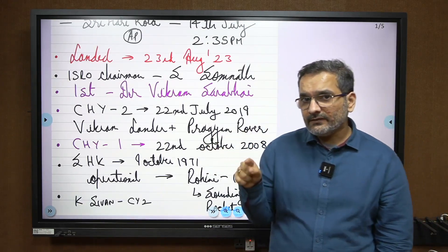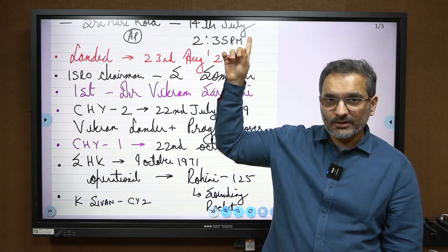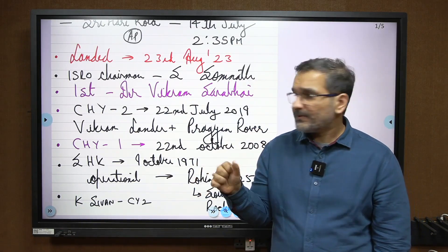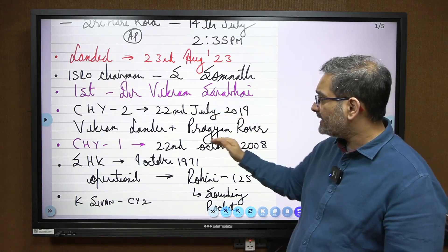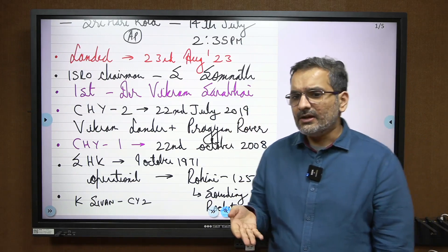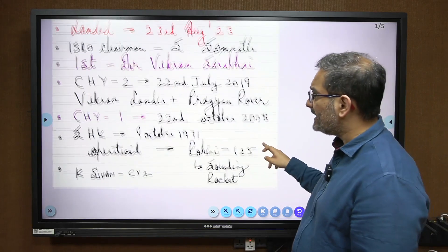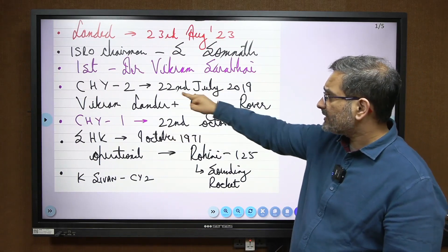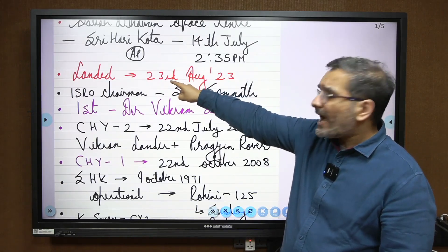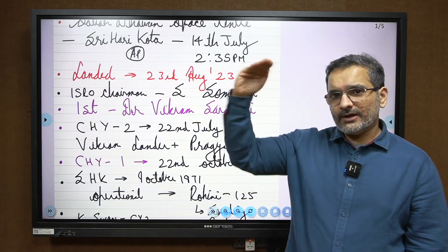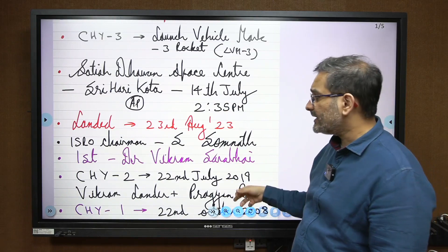Since we are talking about Chandrayaan-3, we should cover Chandrayaan-2 and Chandrayaan-1 as well, and who was the first to land on the moon overall. Chandrayaan-2 was launched on 22nd July 2019. It had a Vikram lander and Pragyan rover, but it crash-landed — an unsuccessful landing. Chandrayaan-1 was launched on 22nd October 2008. So 22nd–22nd for Chandrayaan-1 and 2, and Chandrayaan-3 landed on the 23rd of August. It was a 40-day journey.